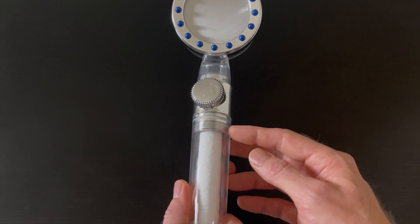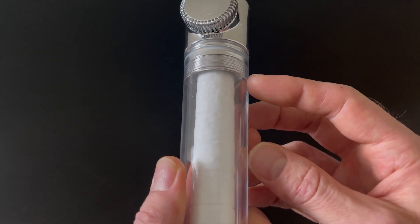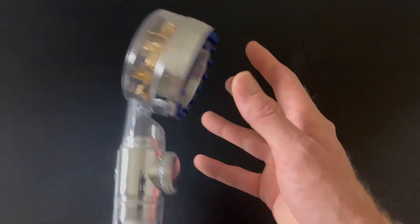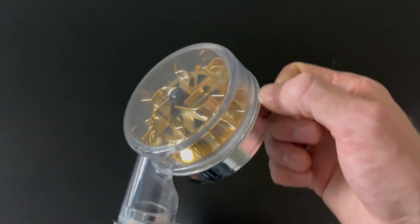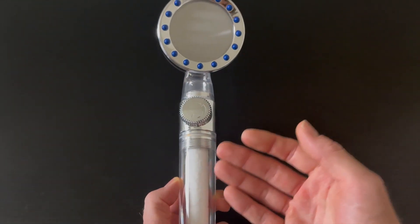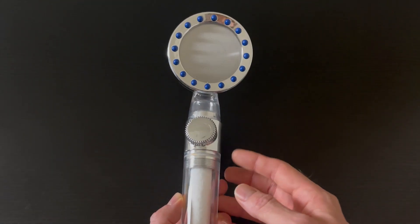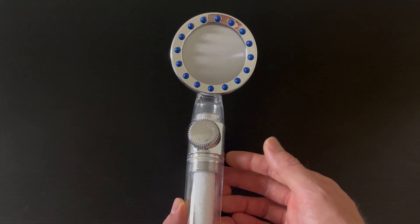It has a double filtration system made from PP cotton material located in the handle as well as in the head. This filters out sediments, heavy metals, suspended particles, and any impurities, because you don't want to shower putting any nasty stuff on your body.